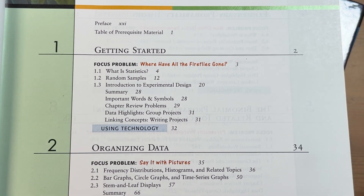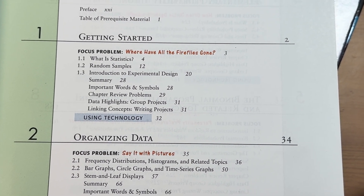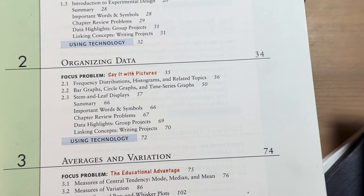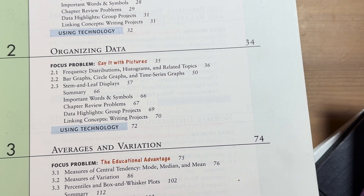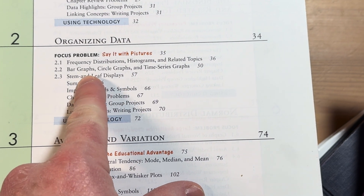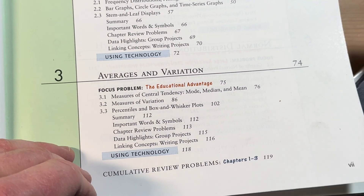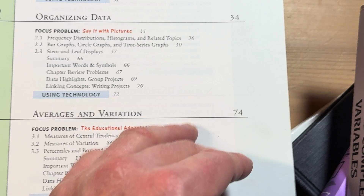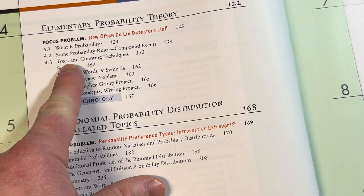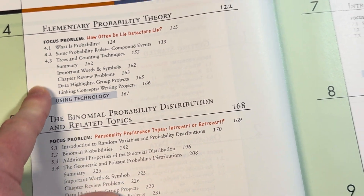Getting started: What is statistics? Random samples, introduction to experimental design, organizing data — like bar graphs, circle graphs, really simple stuff. Averages and variation, this is very simple stuff. Elementary probability theory gets a little bit harder here. Usually people have a hard time with this.